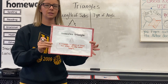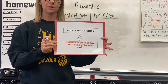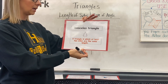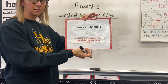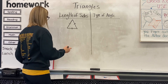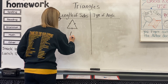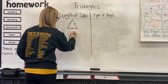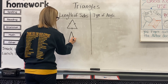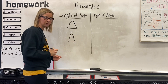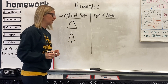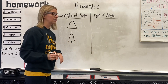The second one is called an isosceles triangle. This type of triangle has at least two sides that are the same length. For example, it might look more like a tall triangle where these two sides are the same length, and the one at the bottom is not the same length. That's called isosceles.